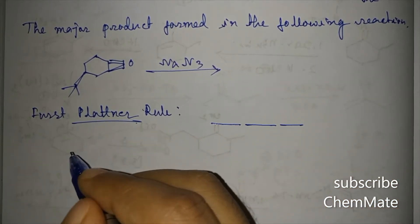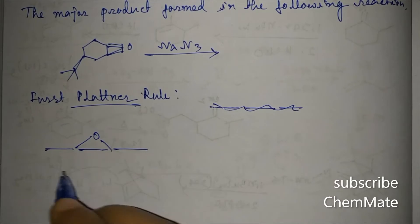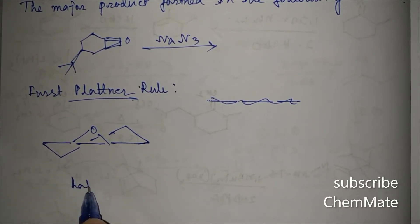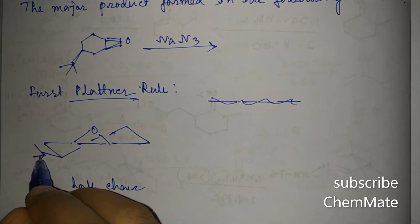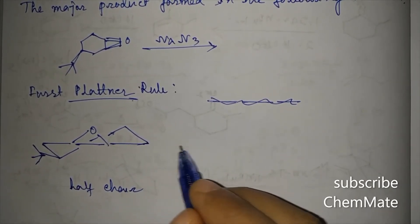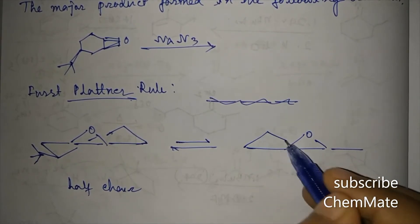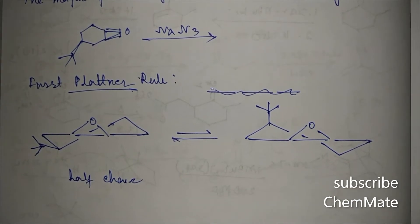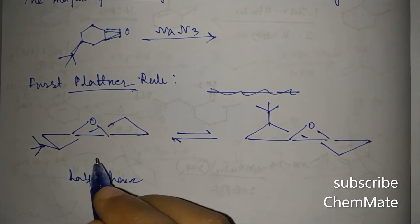According to the first Platinum rule, we first draw the conformation of the cyclohexane epoxide. The epoxide ring is above the plane, giving a half-chair conformation. The tertiary butyl group can be in equatorial or axial position. Since the equatorial position is more stable, the equilibrium shifts toward the conformation with t-butyl equatorial.